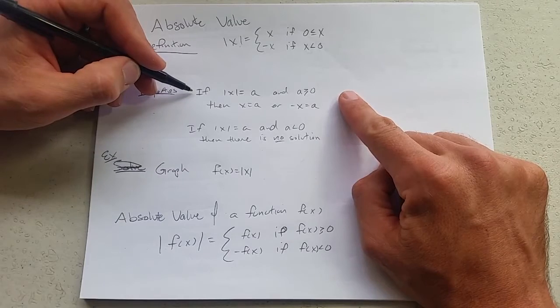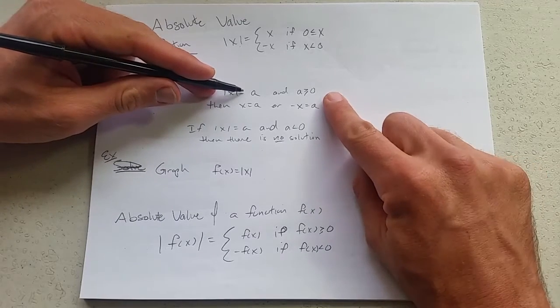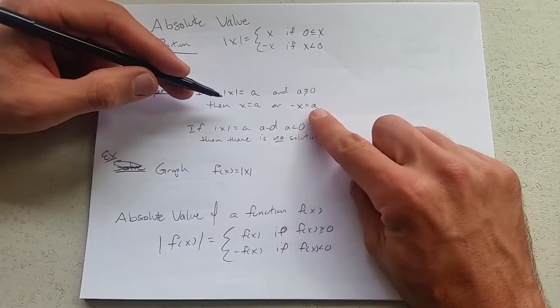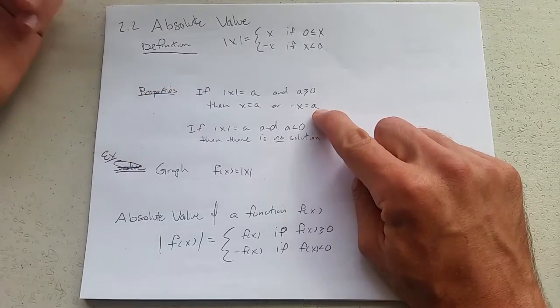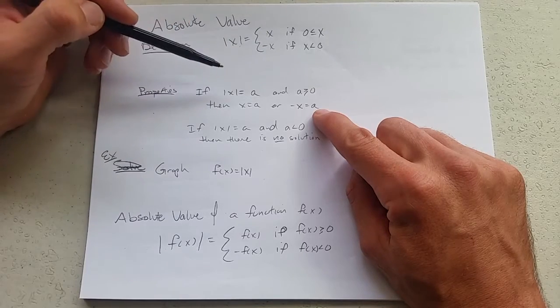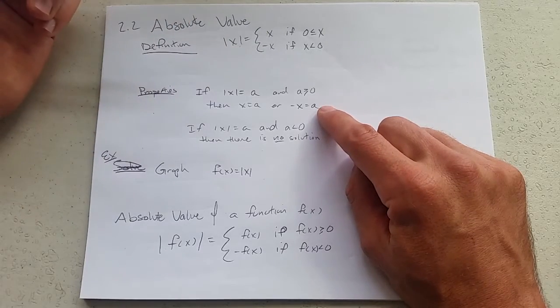So here is one property: if absolute value of x equals a and a is positive, then x equals regular a or negative x equals a. So just basically swapped in x or negative x and you get these two solutions.